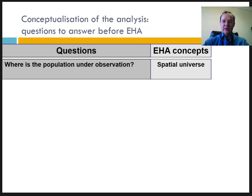This refers to the spatial universe covered by the study area — be it a survey, national register, panel, HDSS, or census. The data only covers a specific area, either through exhaustive data collection or through sampling, but it is always limited to a specific space. You need to know what space your data cover. There should be exact correspondence between the spatial universe and the person-years at risk accounted in your analysis. No time spent outside your study area should be included.